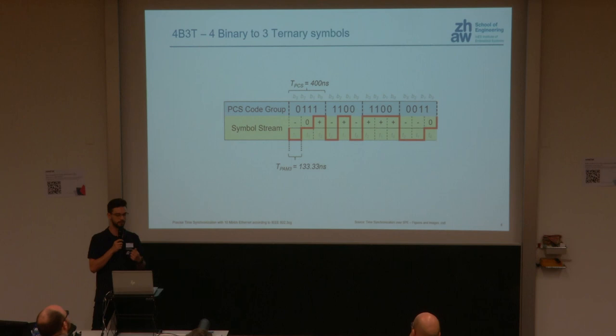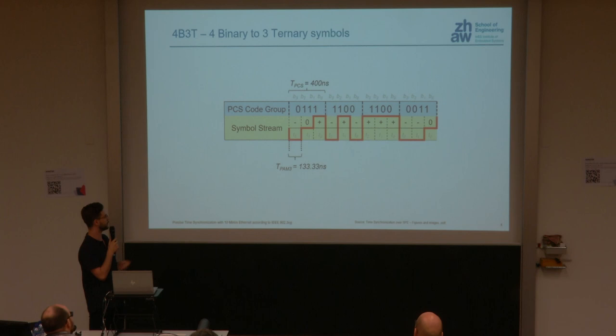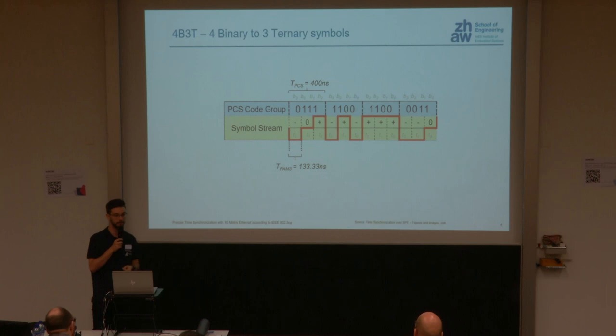4B3T stands for 4 binary to 3 ternary. It's an encoding type where four bits — a PCS code group — are encoded into three symbols. At 10 megabit per second, this PCS code group has a period of 400 nanoseconds. Splitting that across three symbols gives a period of 133 nanoseconds per symbol.